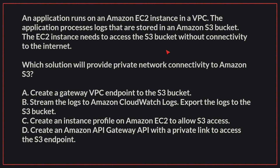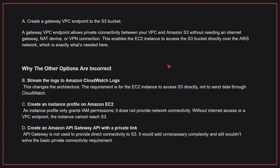The correct answer is A: Create a gateway VPC endpoint to the S3 bucket. A gateway VPC endpoint allows private connectivity between your VPC and Amazon S3 without needing an internet gateway, NAT device, or VPN connection. This enables the EC2 instance to access the S3 bucket directly over the AWS network, which is exactly what is needed here.